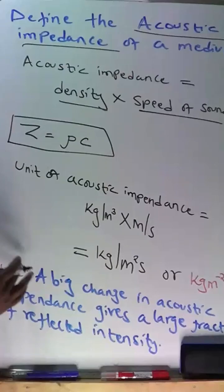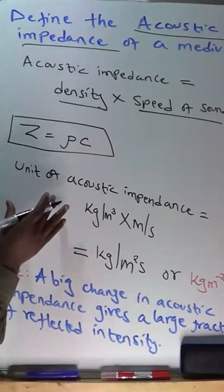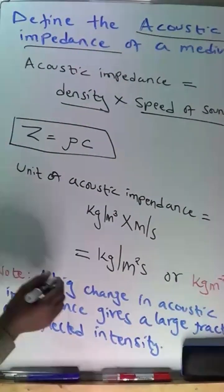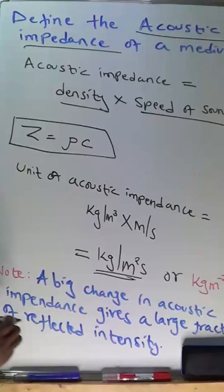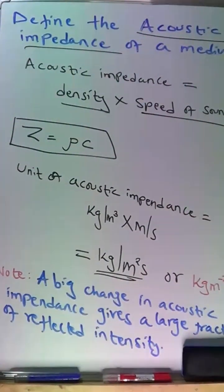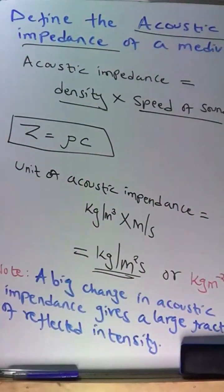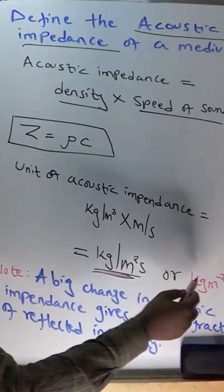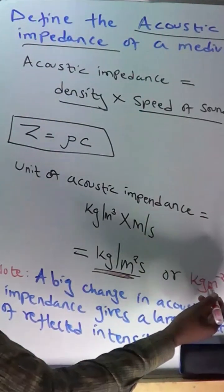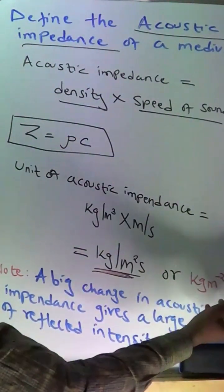The standard unit of acoustic impedance is kilogram per meter square second. You see here it is kilogram per meter square second, or you can also write it as kilogram meter square negative.